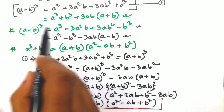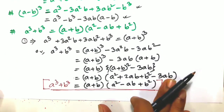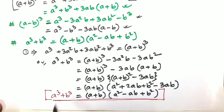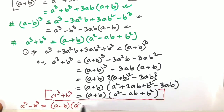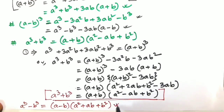Similarly, a³ − b³ = (a − b)(a² + ab + b²). This is also one of the most important formulae of class 8 standard.